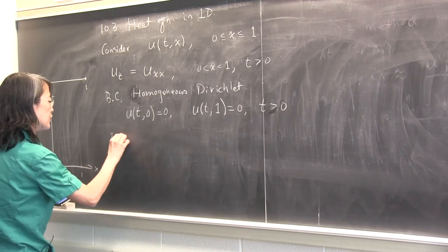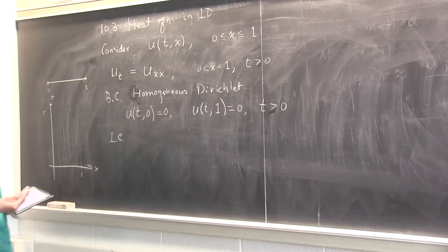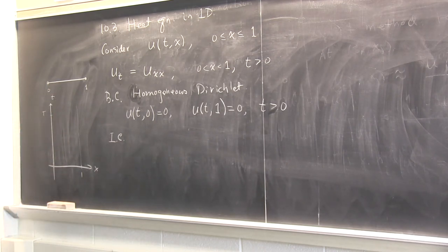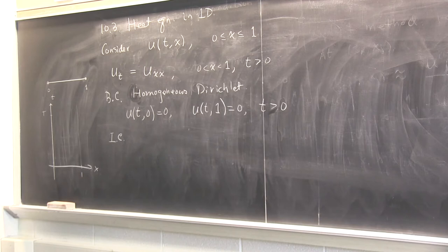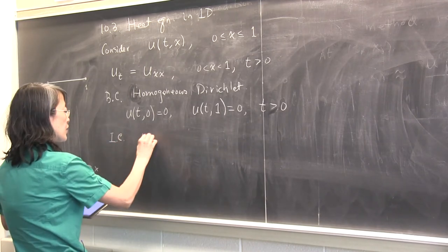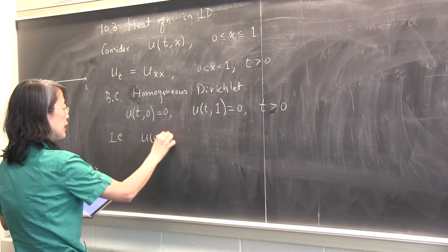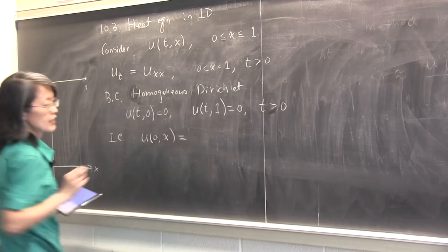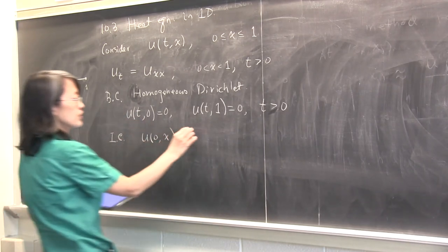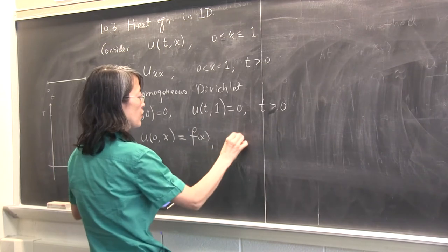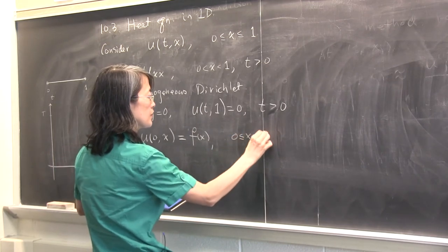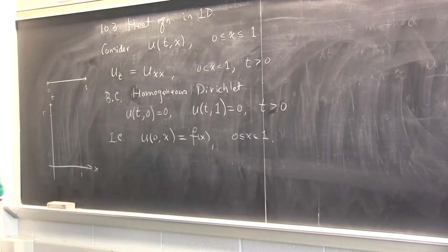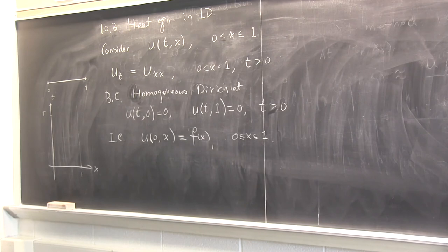You also have an initial condition — the initial temperature distribution in the rod. Say you stuck it in the oven and it's hot, then you take it out and put ice-water mixture at the sides. So initially, at T=0, your distribution is a function f of x for x between zero and one. That's the problem setting.